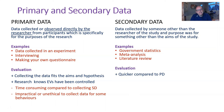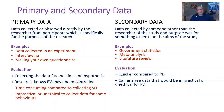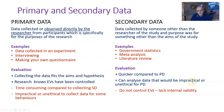Why is secondary data good? You can do it from your office without going out to collect data — it's quick. You can also access large amounts of data or data that would be impractical for you to collect yourself. For example, with COVID vaccine tests, if you need 2,000 participants that's impractical on your own, but you could combine 20 studies with 100 people each to reach that number.